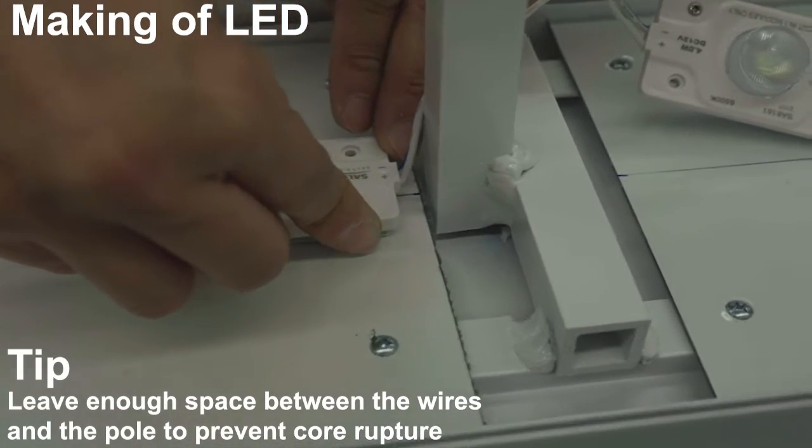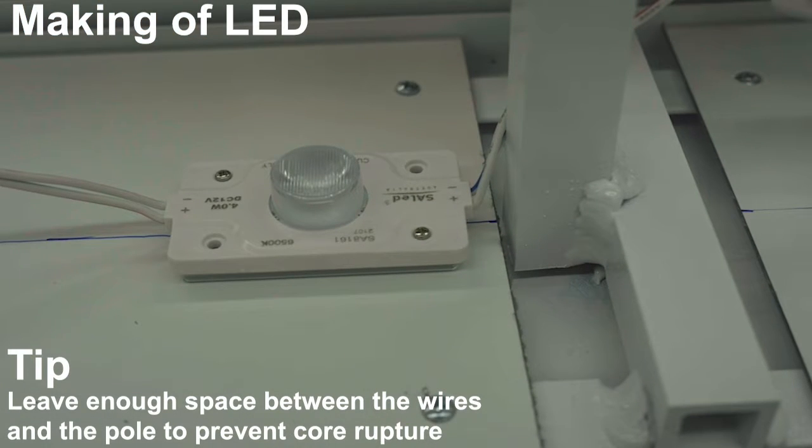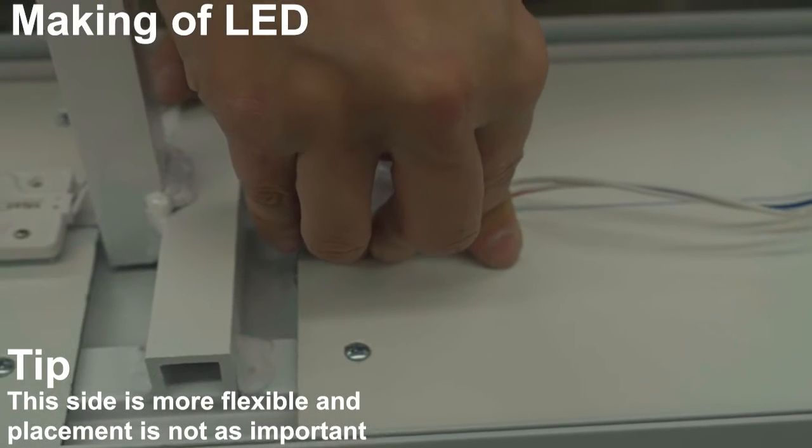Leave enough space between the wires and the pole to prevent core rupture. This side is more flexible and placement is not as important.